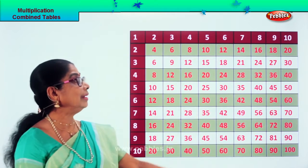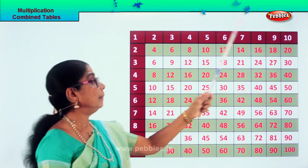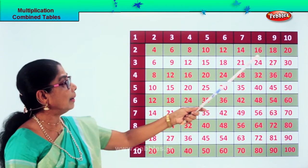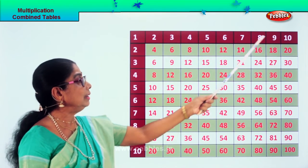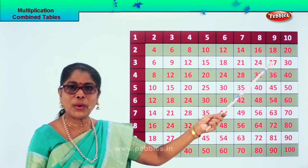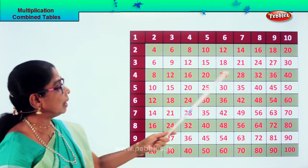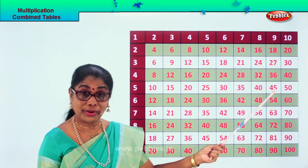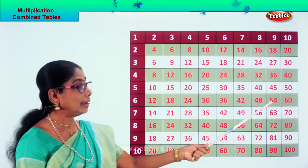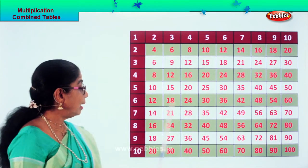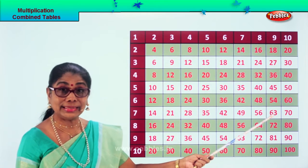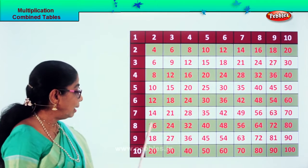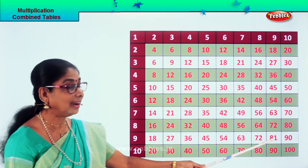Now what do we do? Go for nine. Look at the nine — let's do the nine times table. Nine ones are nine, nine twos are eighteen, nine threes are twenty-seven, nine fours are thirty-six, nine fives are forty-five, nine sixes are fifty-four, nine sevens are sixty-three, nine eights are seventy-two, nine nines are eighty-one.